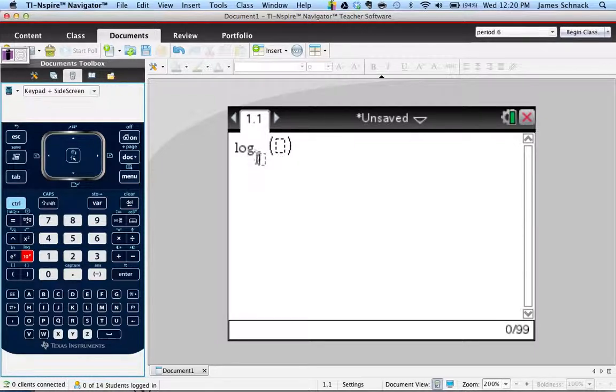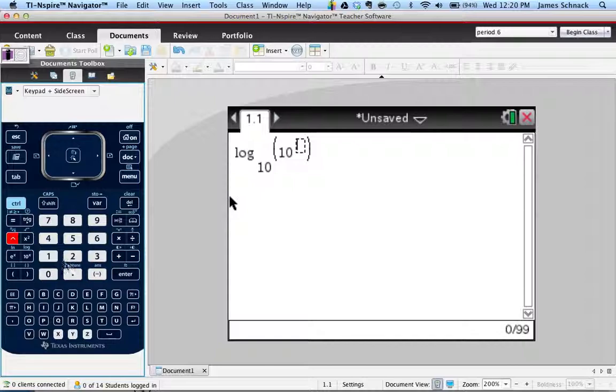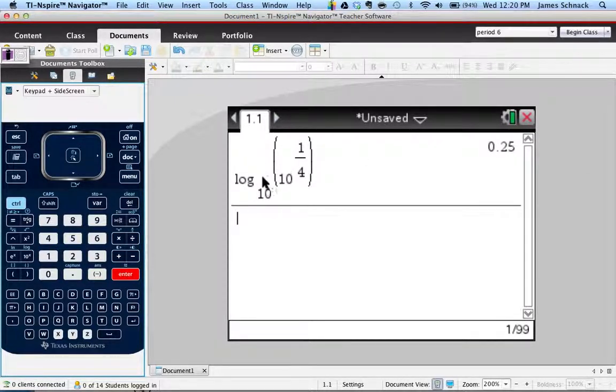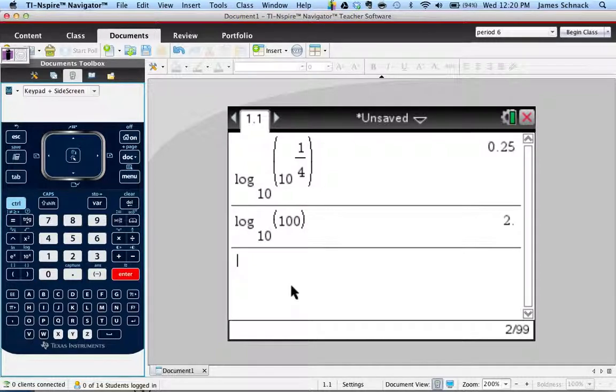And notice here, when you push that button, it actually gives you a space to put the base that we want. So I'm going to put base 10. Base 10 of what? One of these was the fourth root of 10. Easiest way to put that into the calculator is using a fractional exponent. Bam! It's equal to one-fourth. 10 to the power and log base 10 cancel each other out. Log base 10, 100. Enter. Boom! Two. Alright. Just what we expected.